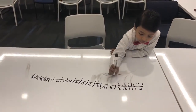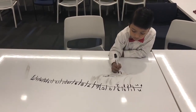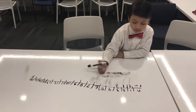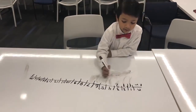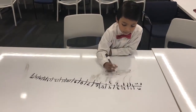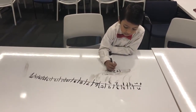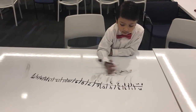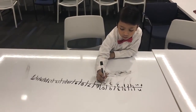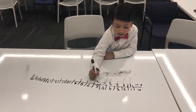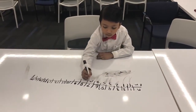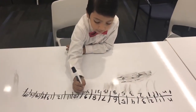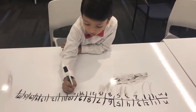Then we get 2 because 1 plus 1 equals 2. Then we get 3 because 1 plus 2 equals 3, and so on — with 5, 8, 13, 21, 34, and so on.